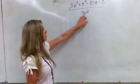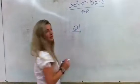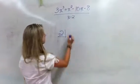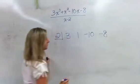So I'm going to do synthetic division, so I'm going to switch the sign of this, so it's going to be positive 2. Then I'm going to take all of these coefficients and line them up right here, so 3, 1, negative 10, and negative 8.